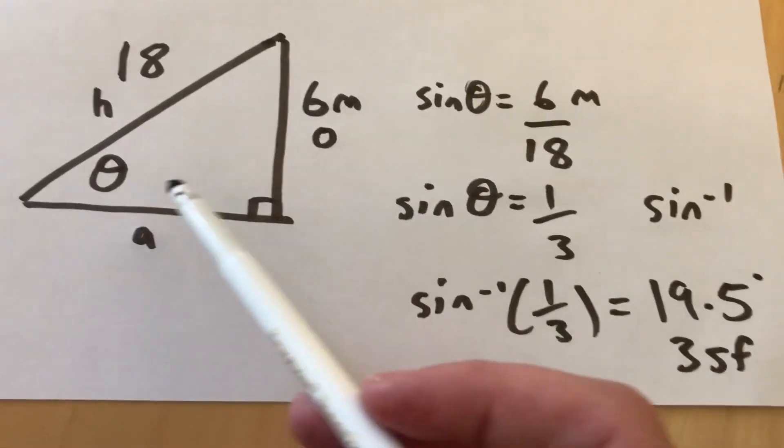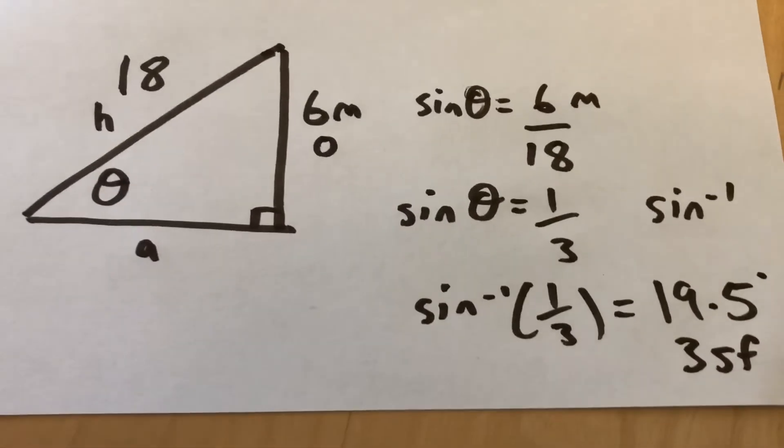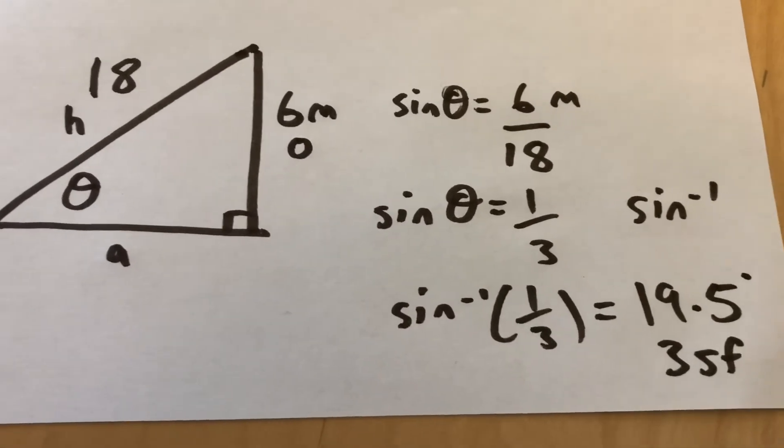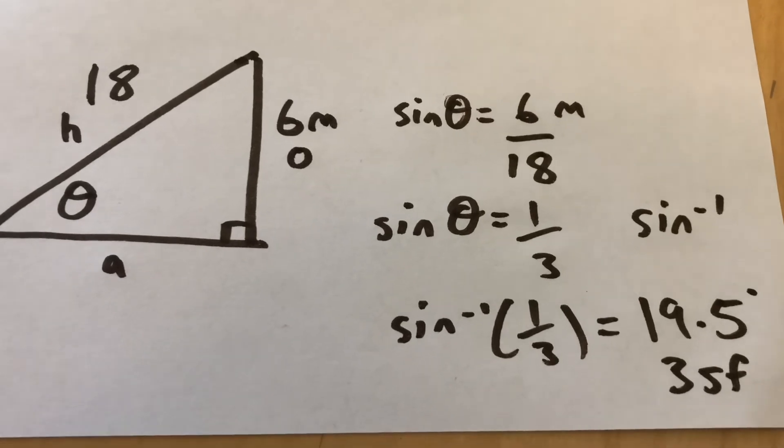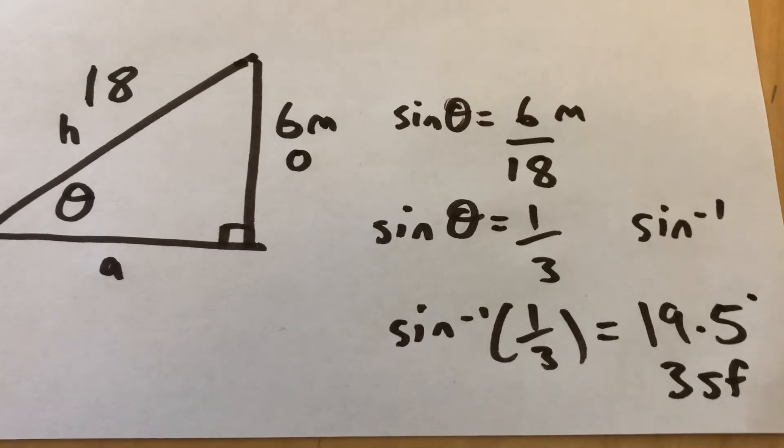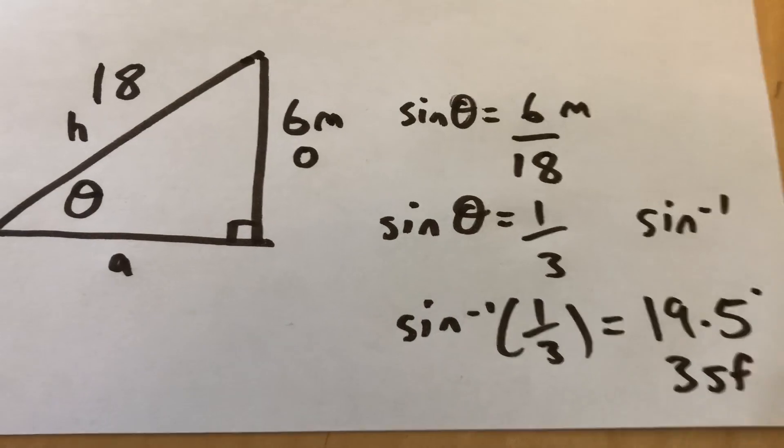And that makes sense. Yeah, 19, nearly 20 degrees. If I got 0.2 or 300, I'd know I've done something wrong. Okay, there we go. That's two questions on trigonometry: finding a side, then finding an angle. Thanks for watching.